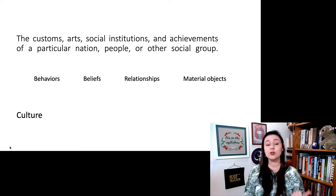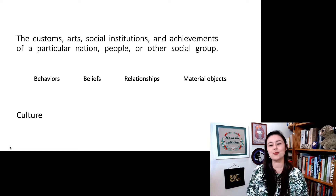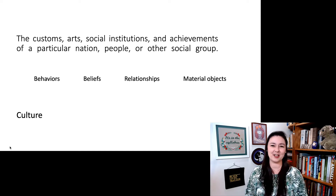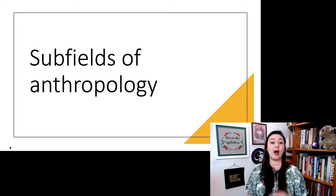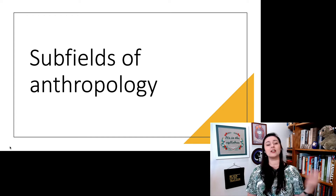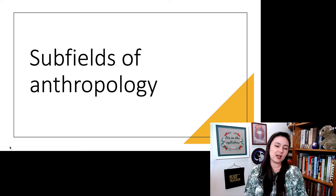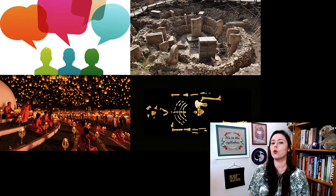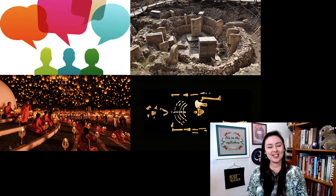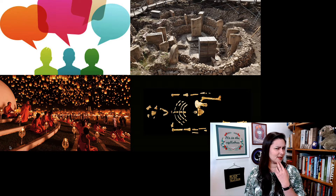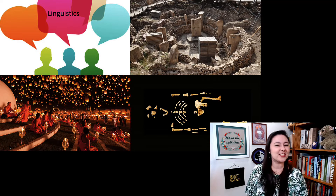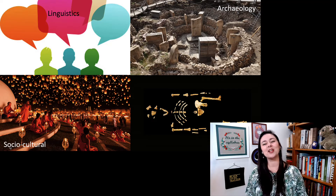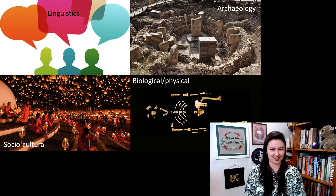What do people do? What do people think? The relationships between other people, and of course the physical objects that we create in our society. So now that we have a broad understanding of anthropology as a whole, let's look at the subfields. I am an American anthropologist, trained in the American school, and in American anthropology we have this thing called the four subfields: linguistics, archaeology, sociocultural anthropology, and biological or physical anthropology.